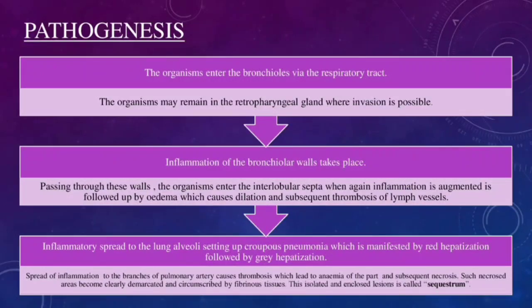Let us now discuss about the pathogenesis of this disease. The organisms enter the bronchioles via the respiratory tract. They remain in the retropharyngeal gland, from where invasion is possible. Inflammation of the bronchiolar walls takes place. Passing through these walls, organisms enter the interlobular septa, where inflammation is augmented, followed by edema which causes dilation and subsequent thrombosis of lymph vessels. The inflammatory process subsequently spreads to the lung alveoli, setting up croupous pneumonia manifested by red hepatization followed by gray hepatization. Spread of inflammation to the branches of the pulmonary artery causes thrombosis, leading to anemia. Such necrosed areas become clearly demarcated and circumscribed by fibrinous tissue. This isolated and enclosed lesion is called a sequestrum.